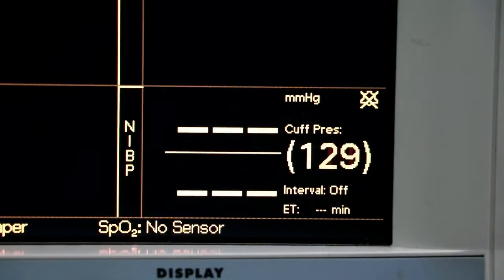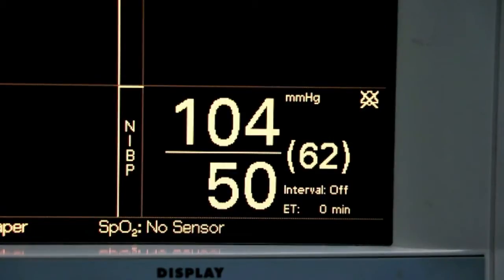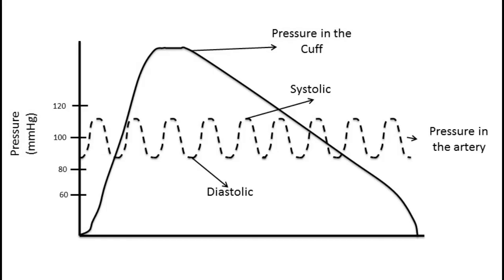During cuff deflation, it detects physical changes in the blood vessel as the blood begins to flow, rather than detecting sounds as in the manual method. The device correlates the occurrence of these signals with the pressure in the cuff to determine the systolic and diastolic pressures. During this procedure, the machine will continually inflate the cuff to a specified pressure, pause at this pressure for a couple seconds, and then slowly deflate the cuff.